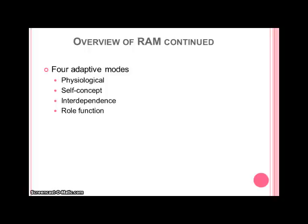Roy's adaptation model also has four specific areas that she focuses on. The first is the physiological mode, which includes five main needs of the physical body: oxygenation, nutrition, elimination, activity and rest, and protection. This is the way the person responds as a physical being to the stimuli.